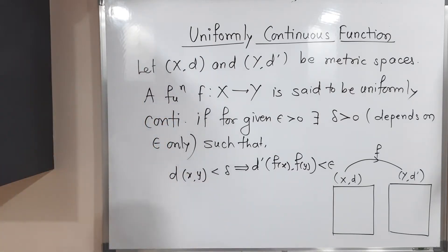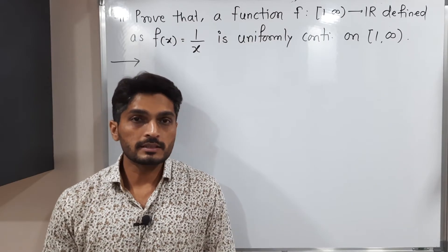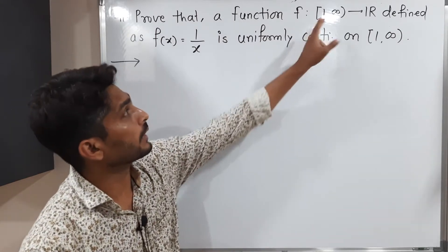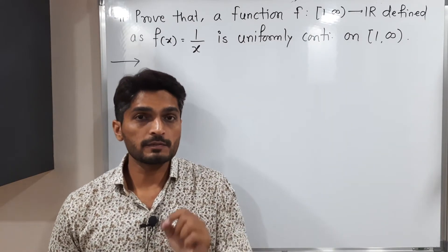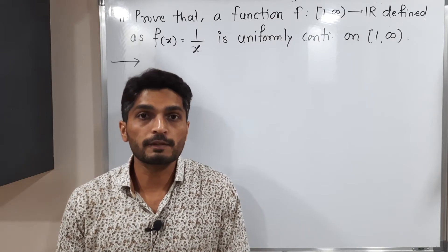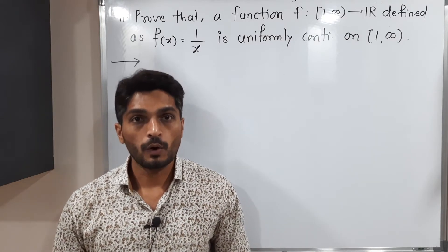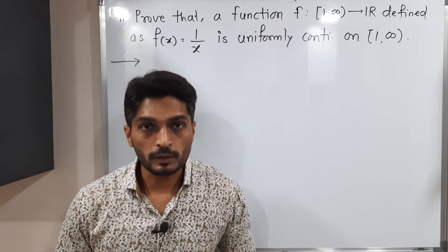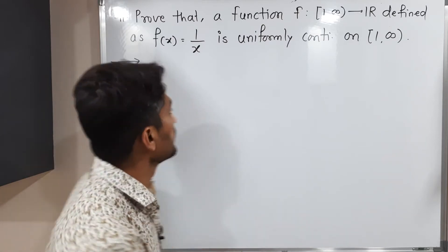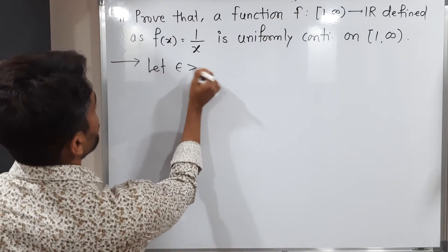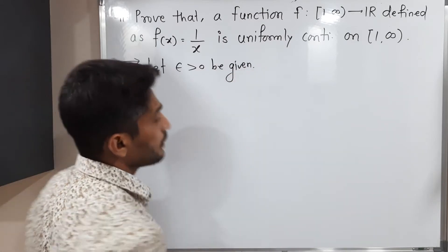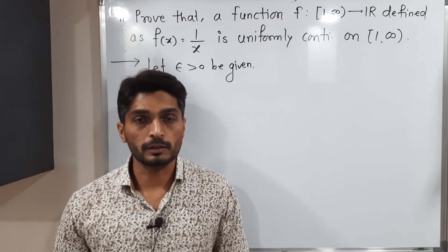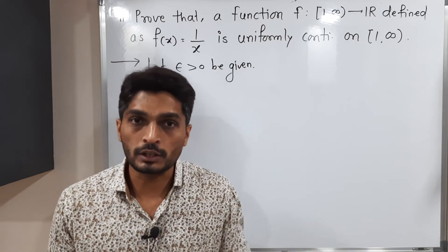Let us discuss one example so you can understand this definition. In this example, we have a function defined on the interval [1, ∞) — closed at one and open at infinity — and the function is defined as f(x) = 1/x. We have to prove that this function f is uniformly continuous on this interval. We are going to do it using the epsilon-delta definition. Let epsilon greater than zero be given, and for this epsilon we have to select delta which depends on epsilon only.